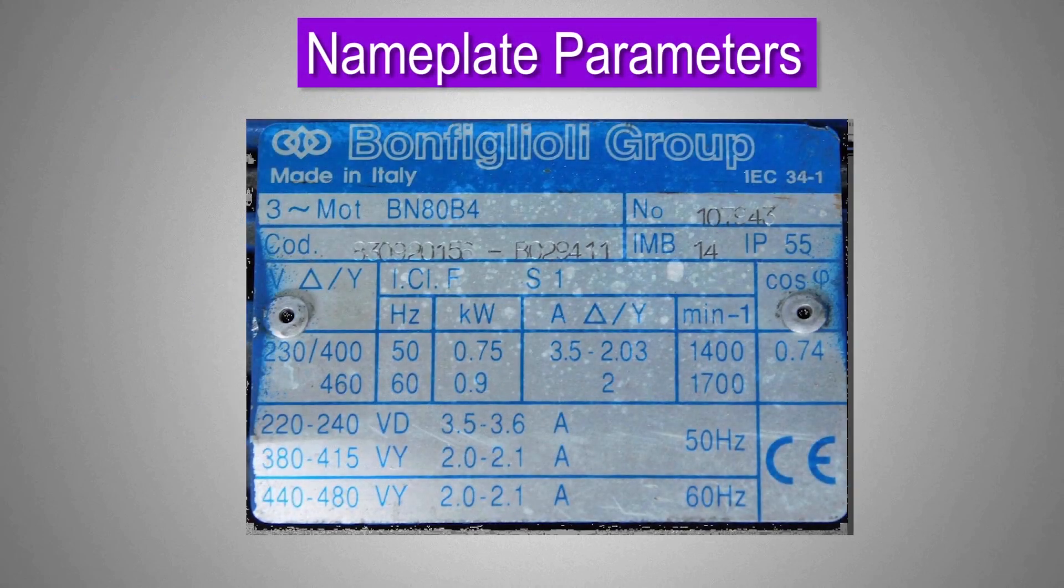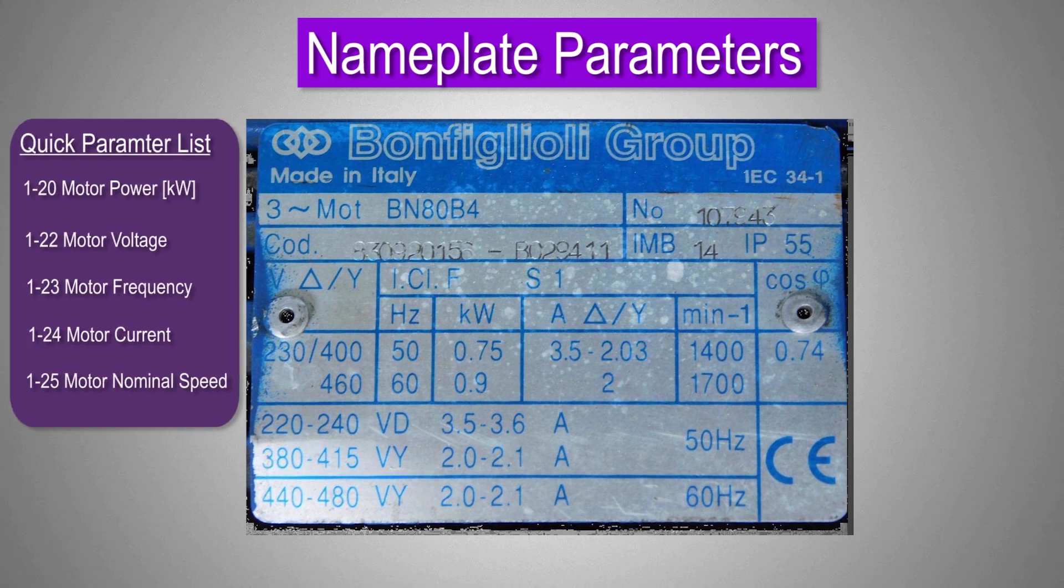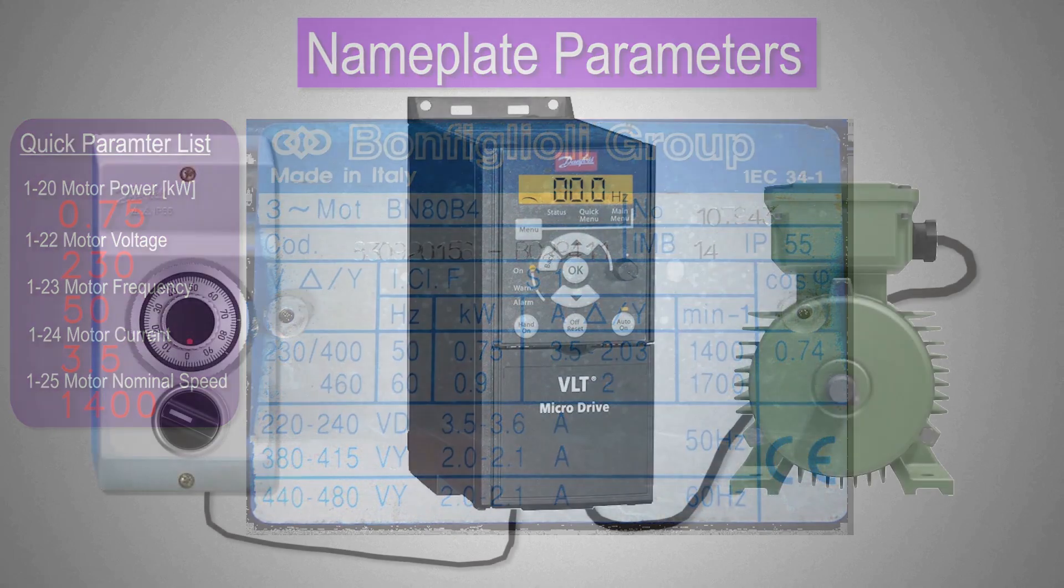Now most of the basic parameter settings are done in the VFD settings. In the next step we have to enter the motor nameplate parameters in the VFD. Mostly these parameters include motor power in kilowatt or HP, motor voltage, motor current and motor RPM.